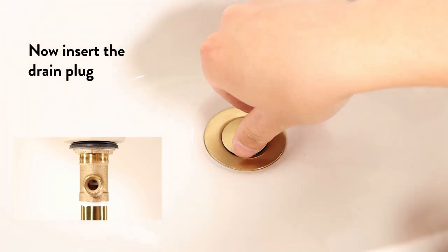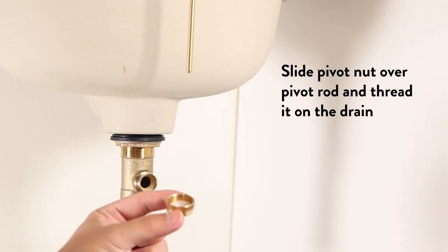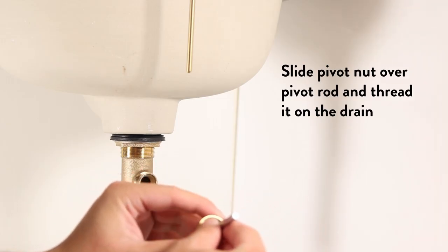Now insert the drain plug. Back to under the sink. Slide pivot nut over pivot rod and thread it on the drain.